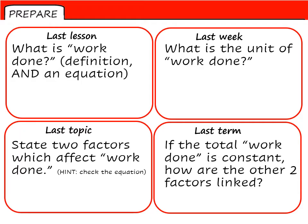Number two: what is the unit of work done? What do we measure it in? Hint — it's very similar to something we've done before. Number three: state the two factors which affect the amount of work done. If you check the equation you've written for question one, you should find them.